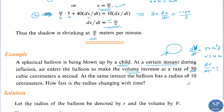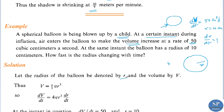If we apply air into this balloon, the volume will be increasing and at the same time the radius is also increasing. Volume is a function of the radius and both are functions of time t. Let the radius be r and the volume be v. The volume of a sphere is v equals 4 by 3 pi r cubed. We are given that dv by dt equals 50 cubic centimeters per second and r equals 10 centimeters at that instant. We need to find dr by dt.